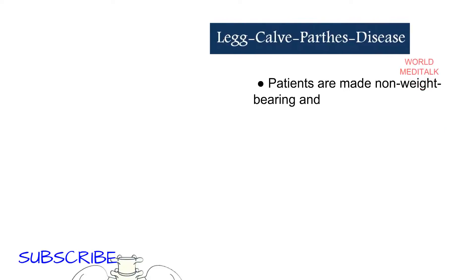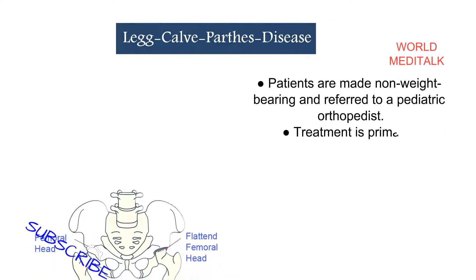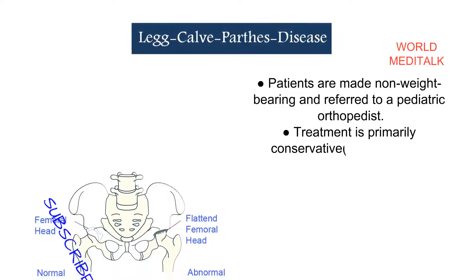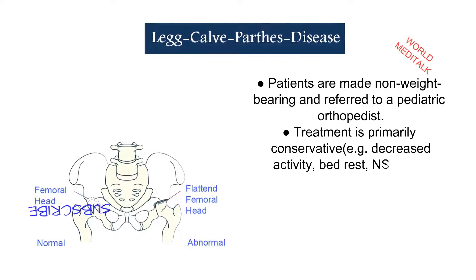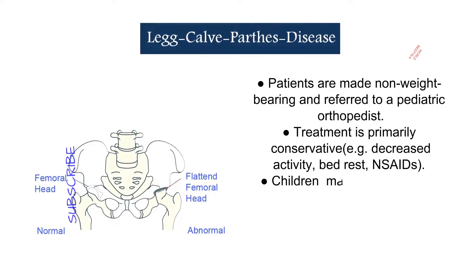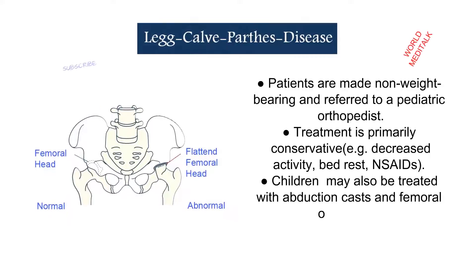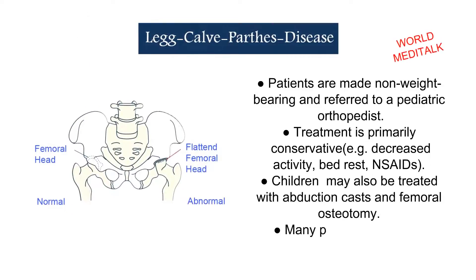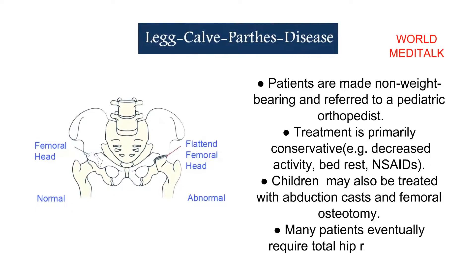Patients are made non-weight-bearing and referred to a pediatric orthopedist. Treatment is primarily conservative, including decreased activity, bed rest, and NSAIDs. Children may also be treated with an abduction cast and femoral osteotomy. Many patients eventually require total hip replacement.